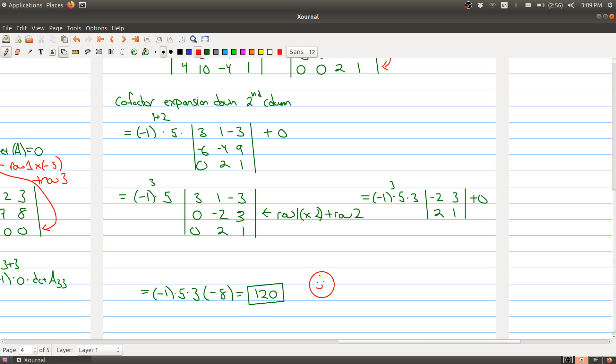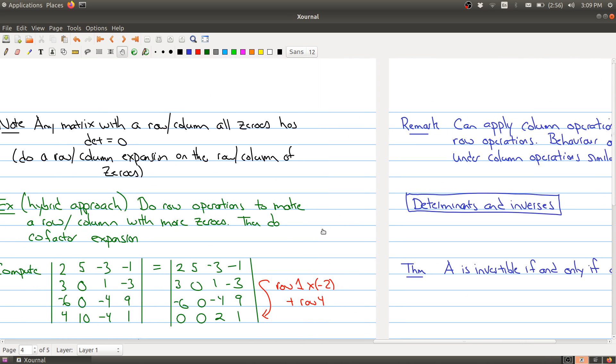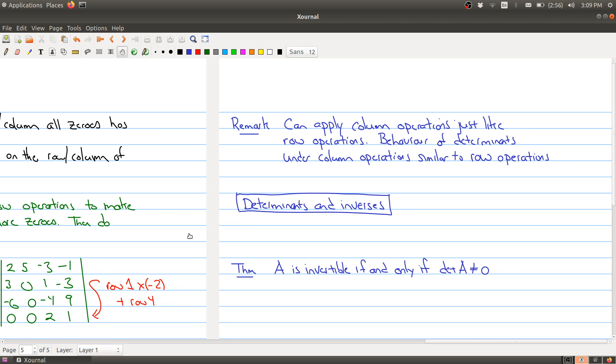Okay. So we saw a bunch of techniques and tools for computing the determinant. And before we move on to the next topic here, I just want to point out that we've been talking about row operations. But you can do things like column operations. You can multiply a column by a constant, you can swap columns around, and you can take a column and take a multiple of it and add it to another column. And those operations behave exactly the same as the row operations. So the determinants under column operations are similar to row operations.